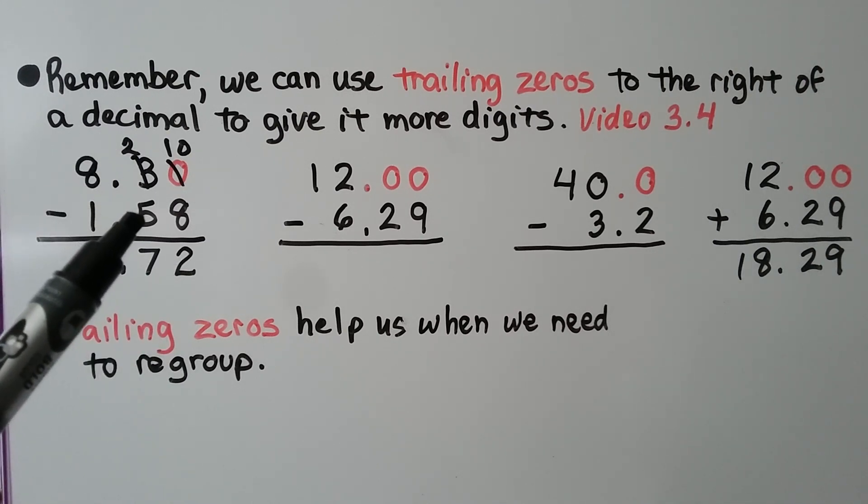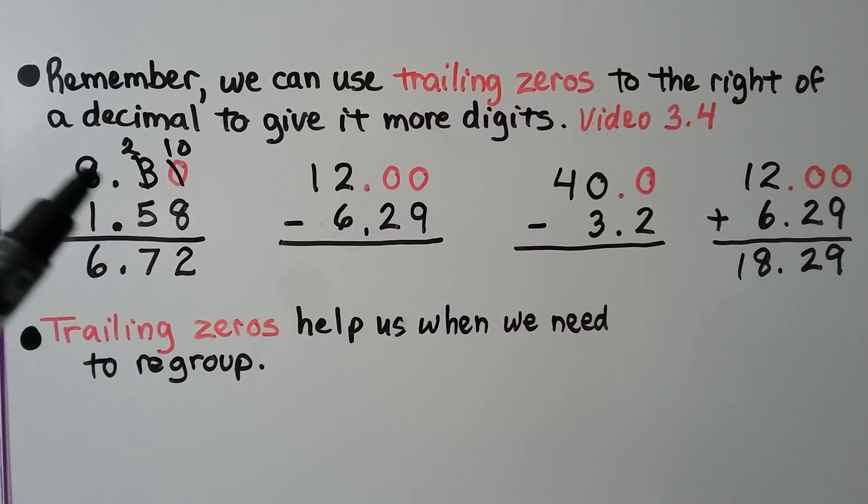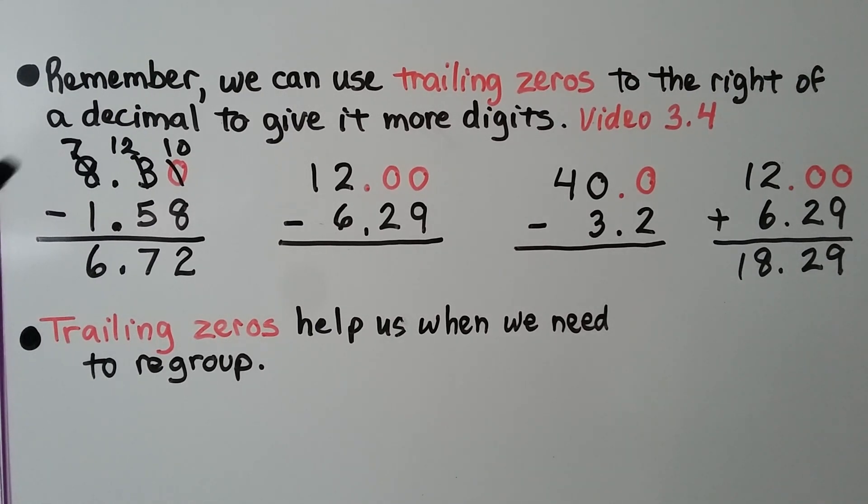Now we have 2 minus 5, and we can't do that. But we need to regroup from the 8. Now we have 12 minus 5, which is 7, and 7 minus 1, which is 6. It's equal to 6.72.